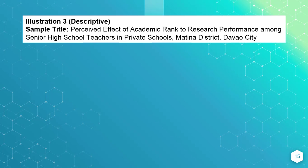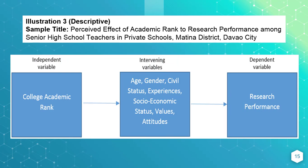The third example is a sample of a descriptive study. The title is 'Perceived Effect of Academic Rank to Research Performance Among Senior High School Teachers in Private Schools, Matina District, Davao City.' The independent variable is the academic rank — college academic rank specifically — and how it supposedly affects the dependent variable, which is research performance. However, some factors may affect the teacher's research performance as well: factors such as age, gender, civil status, employment experience, socioeconomic status, values, and even attitude.